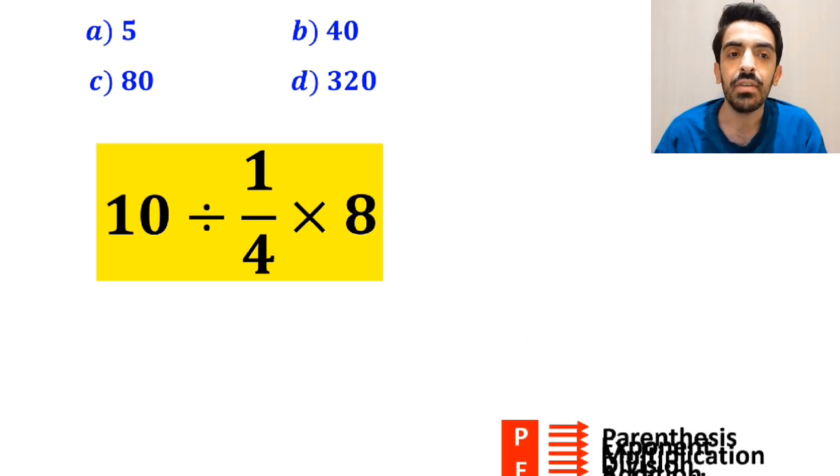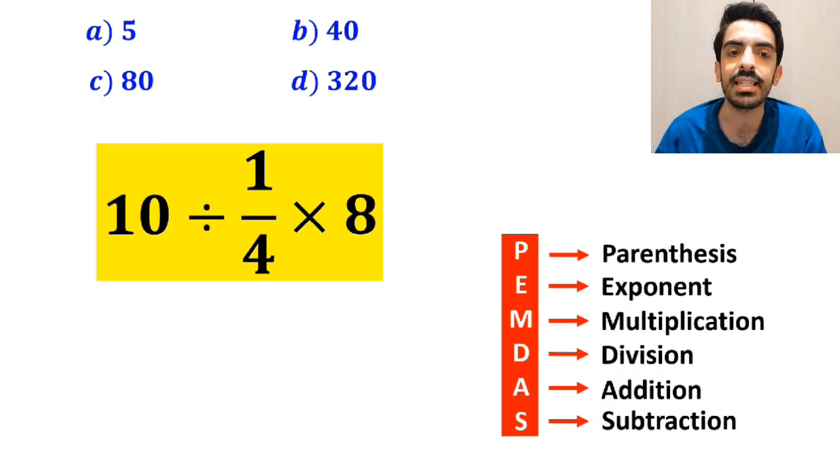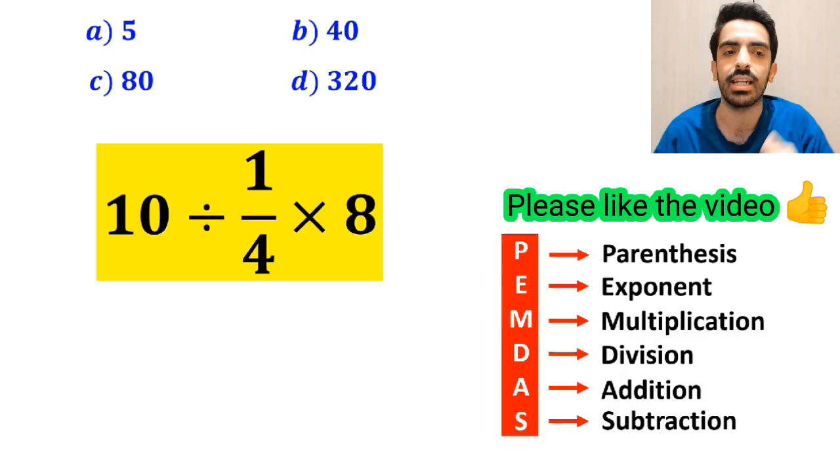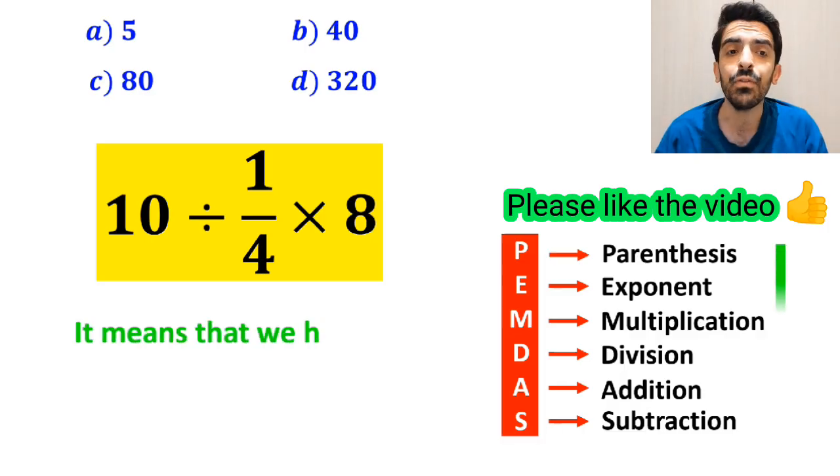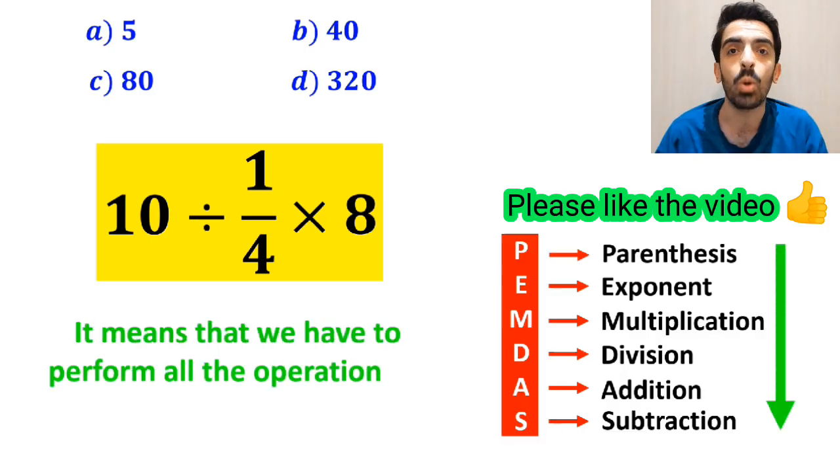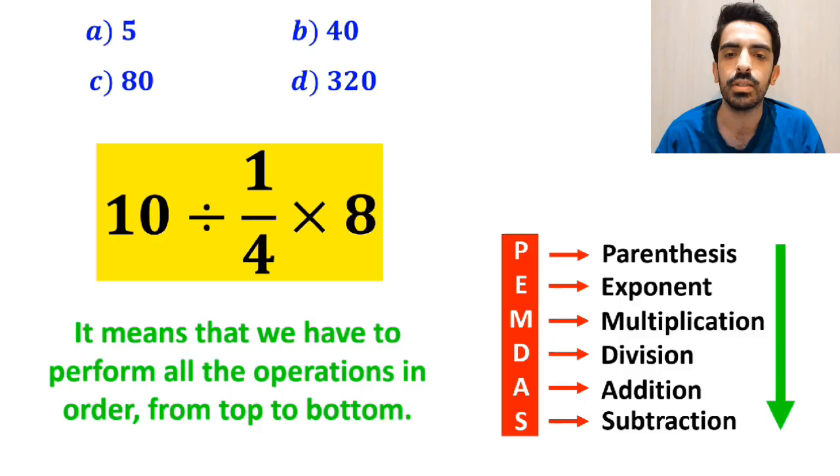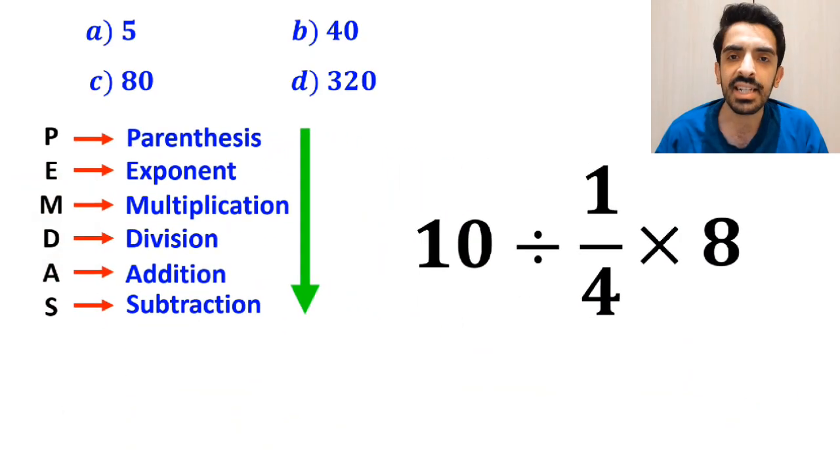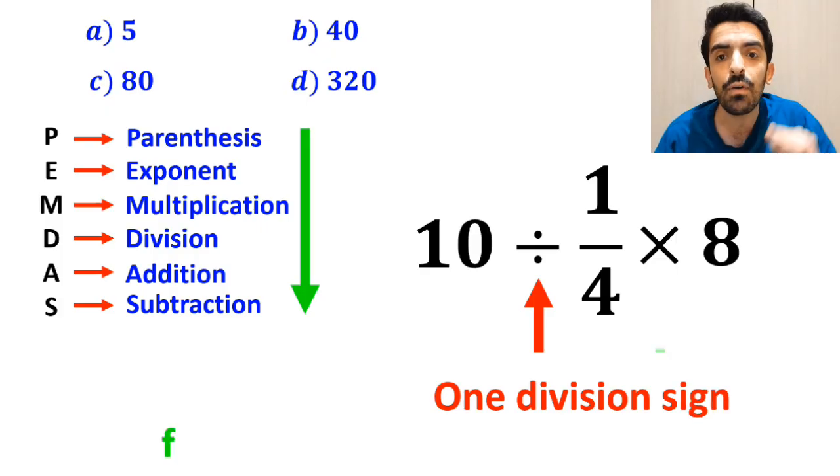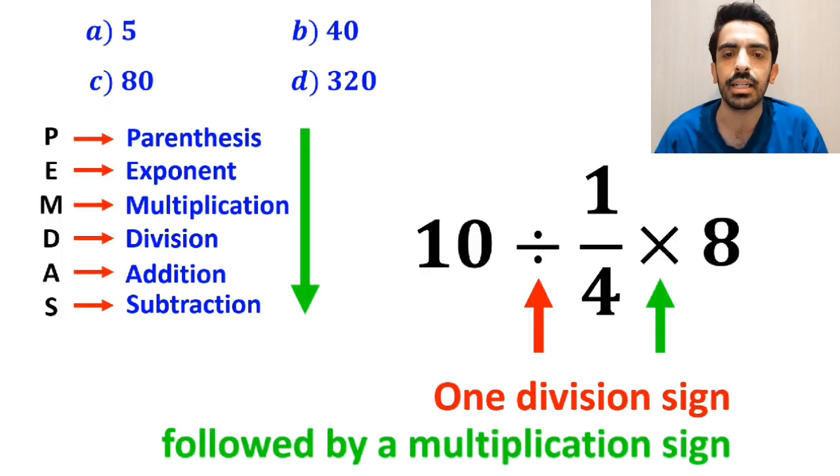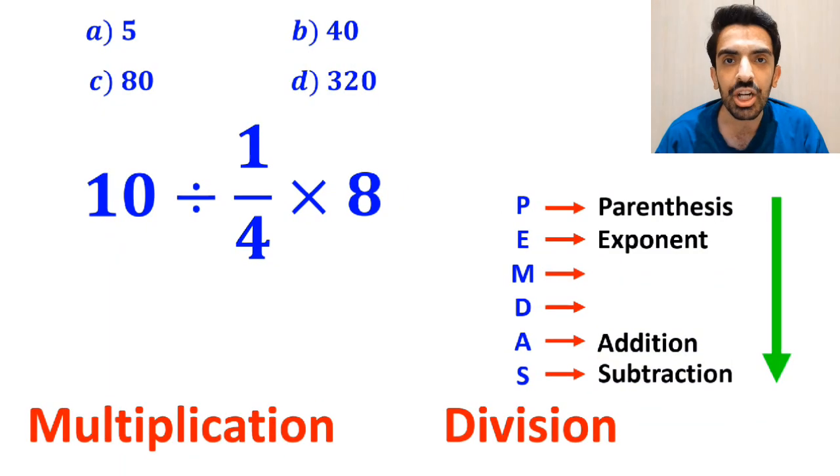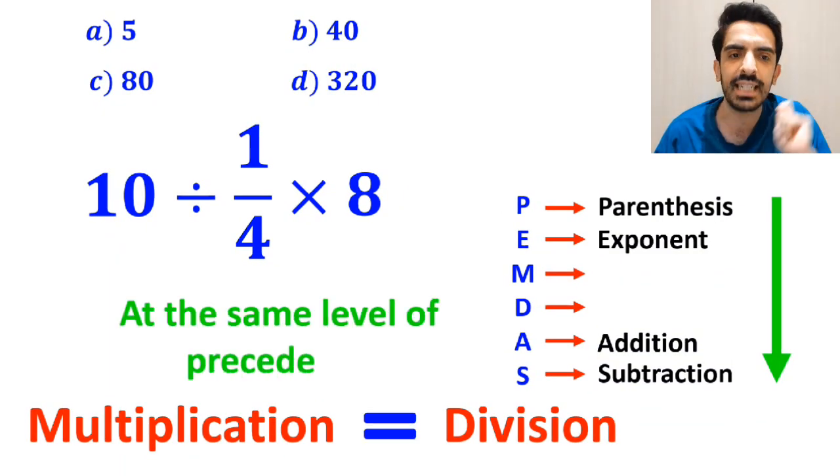To solve this question, we need to follow the PEMDAS rule exactly as I've shown on the screen. It means that we have to perform all the operations in order from top to bottom. As you can see on the screen, at this expression, we have one division sign followed by a multiplication sign. It's very important to note that multiplication and division are at the same level of precedence.